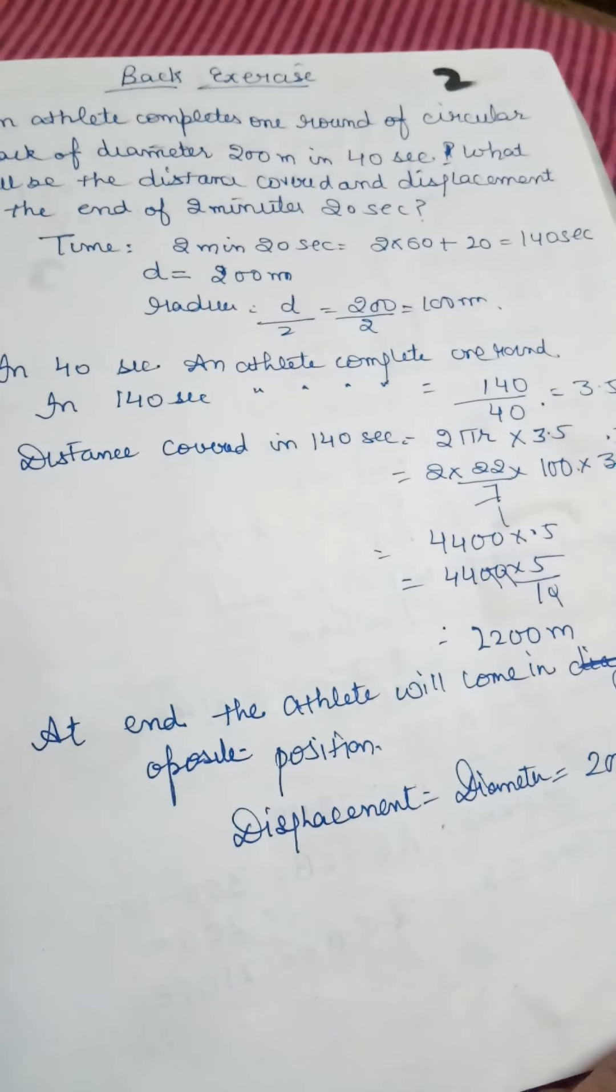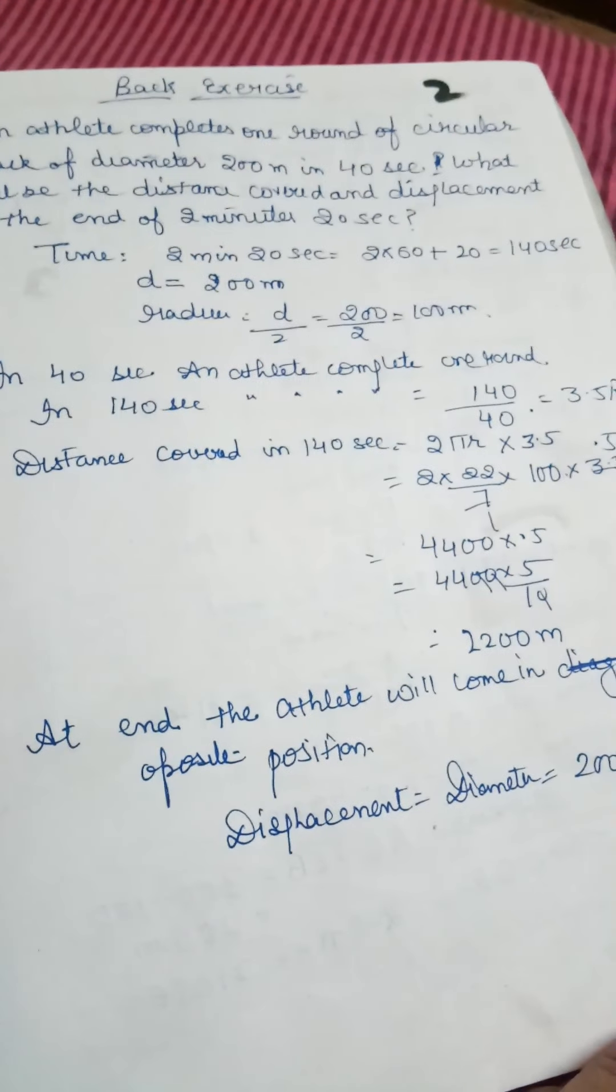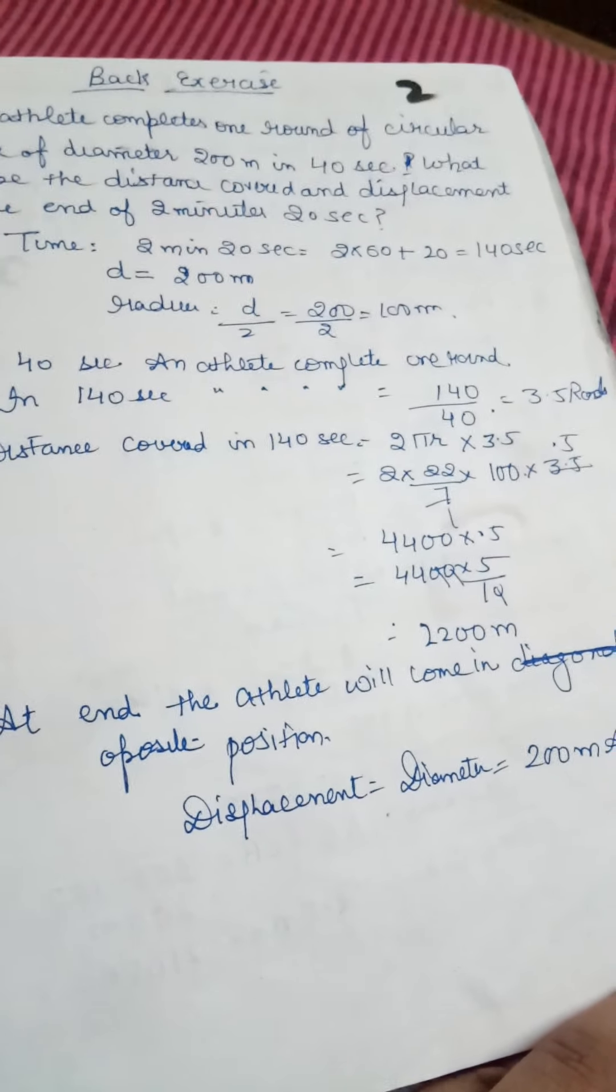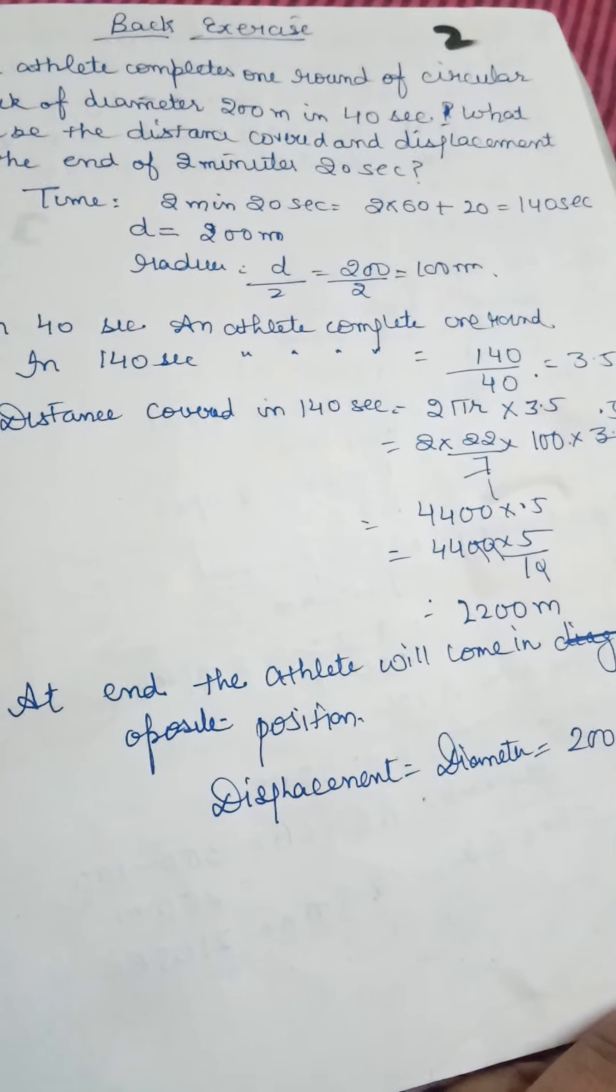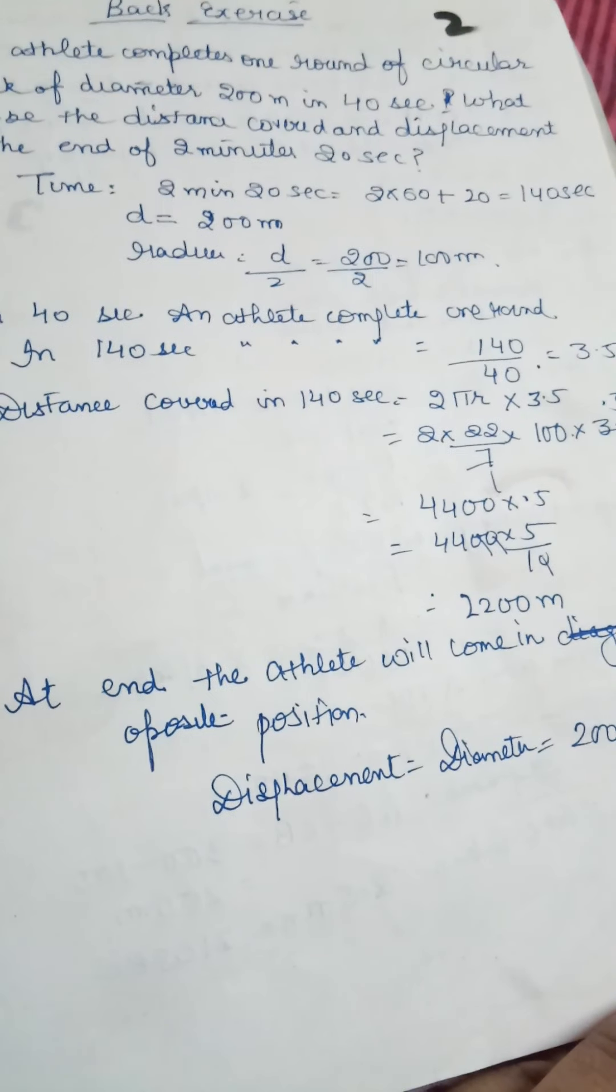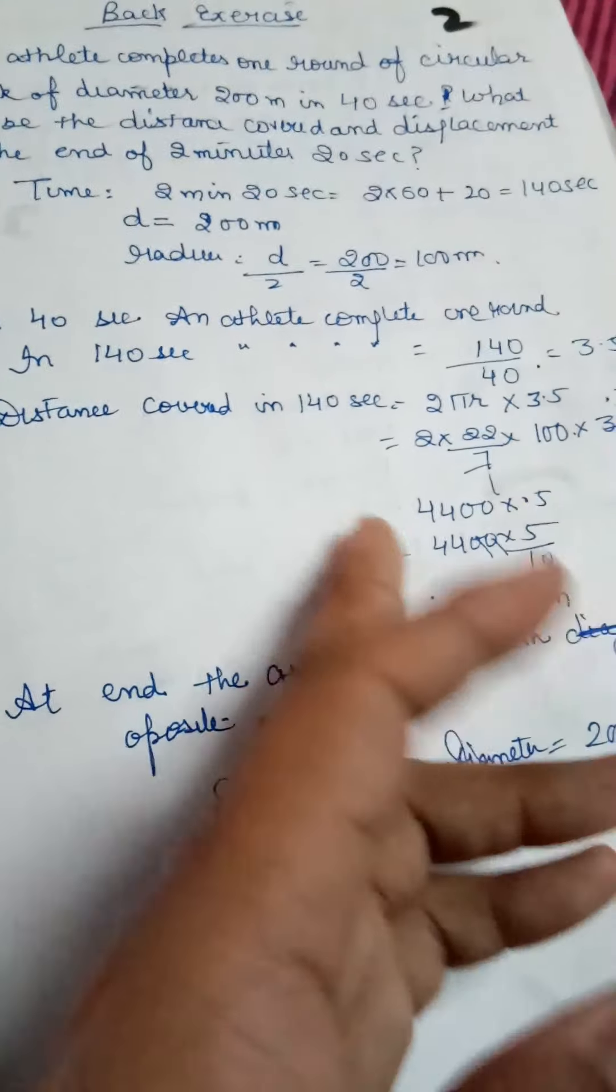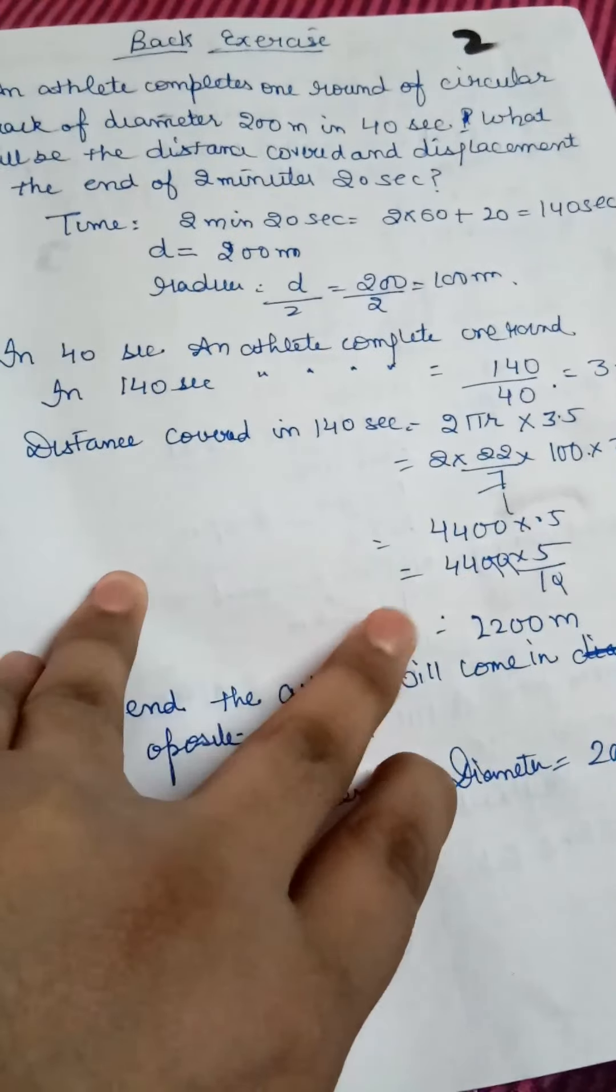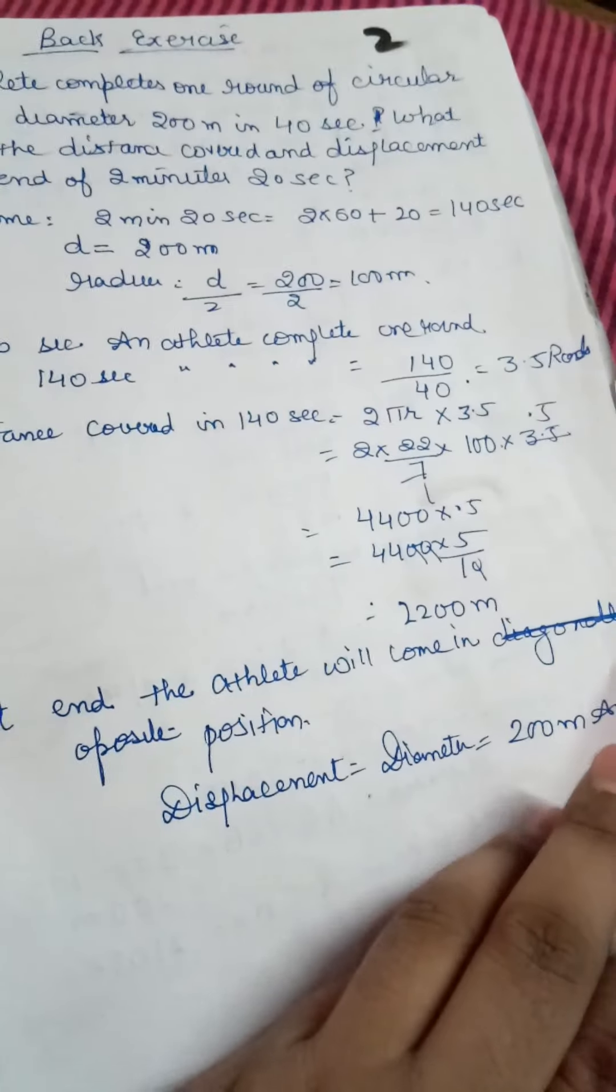The distance covered in 140 seconds is circumference times total number of rounds: 2πr into 3.5. That's 2 into 22/7 into 100 into 3.5, which equals 2200 meters. For 3.5 rounds starting from the initial point, the athlete covers half a round beyond 3 complete rounds, so displacement equals the diameter at this point: 200 meters.